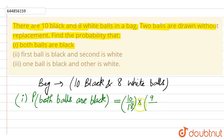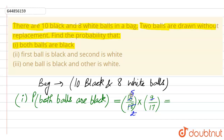The second ball should also be black. The probability for the second ball to be black is 9 divided by 17. Simplifying: 18 cancels with 2, and 10 cancels to give 5, so this becomes 5 by 17. This is the probability that both balls are black.